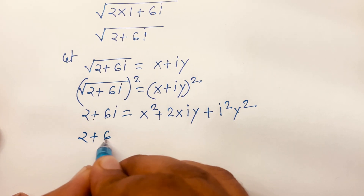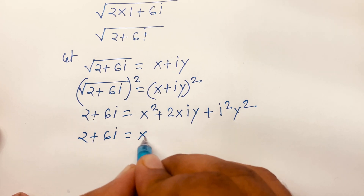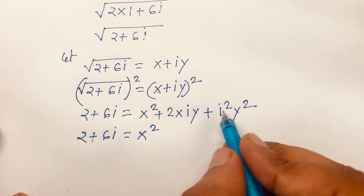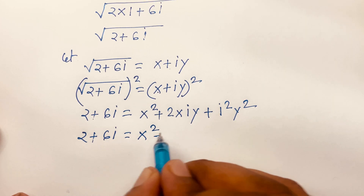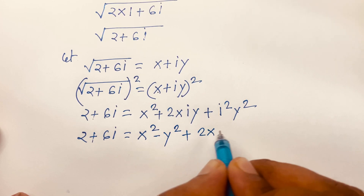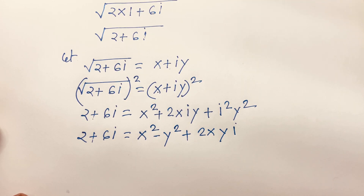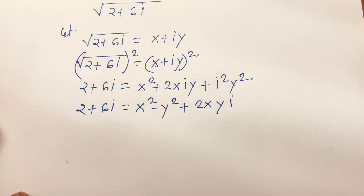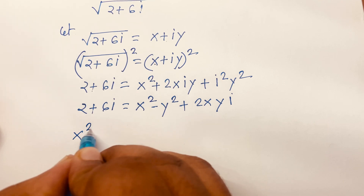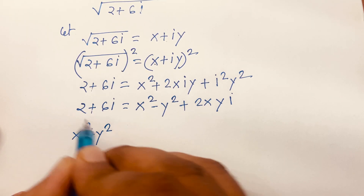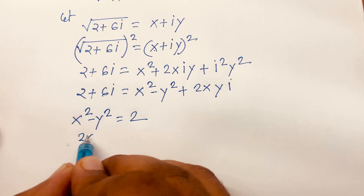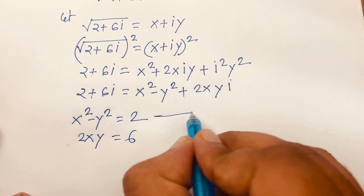Since i² = -1, we get 2 + 6i = x² - y² + 2xyi. Comparing real and imaginary parts: x² - y² = 2 is our first equation, and 2xy = 6 is our second equation.